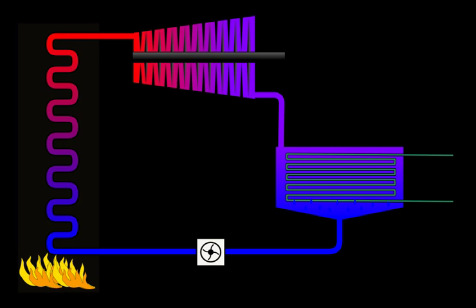Process 3-4, the dry saturated vapor expands through a turbine, generating power. This decreases the temperature and pressure of the vapor, and some condensation may occur. The output in this process can be easily calculated using the chart or tables noted above. In other words, process 3-4 is isentropic expansion in turbine.